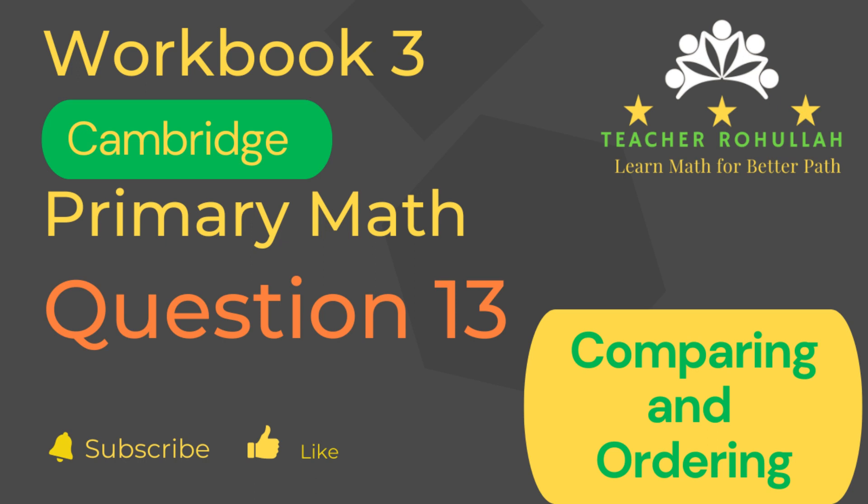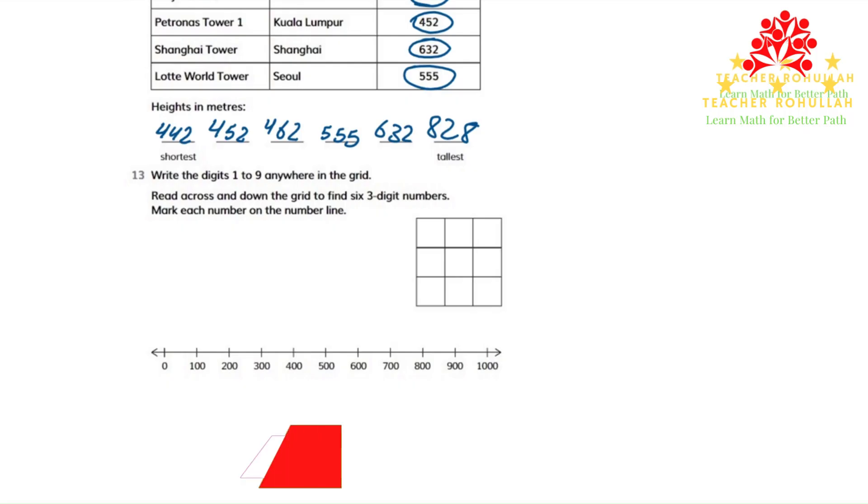Let's now move to the question and solve it. In this question it says, write the digits 1 to 9 anywhere in the grid. Read across and down the grid. Find six three-digit numbers. Mark each number on the number line.